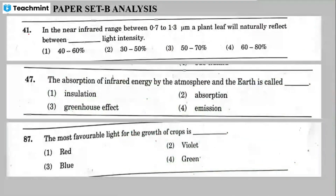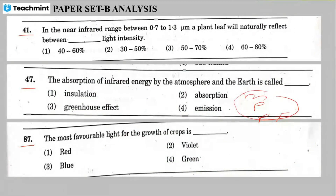Questions 41, 47, and 87 are from meteorology, physiology, and precision farming. Question 41: in the near infrared range between 0.7 to 1.3 micrometers, a plant leaf will naturally reflect between blank percent of light intensity.